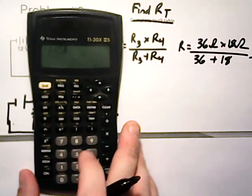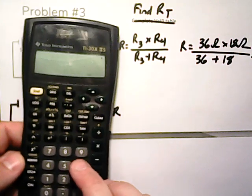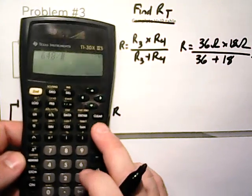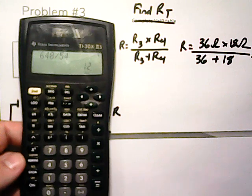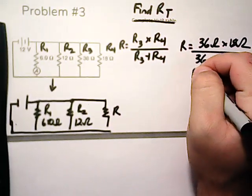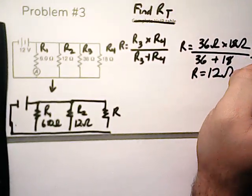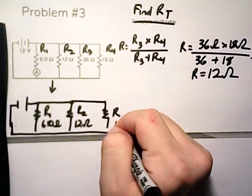So 648 divided by 54. We get 12. So R is going to be equal to 12. So this is our new resistance here would be 12 ohms.